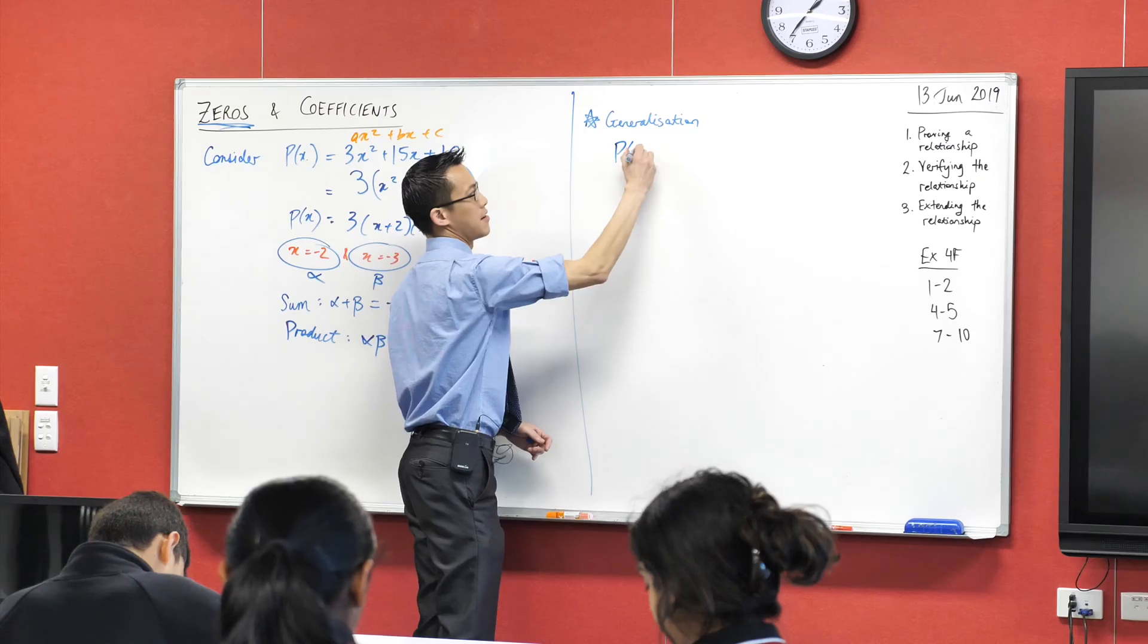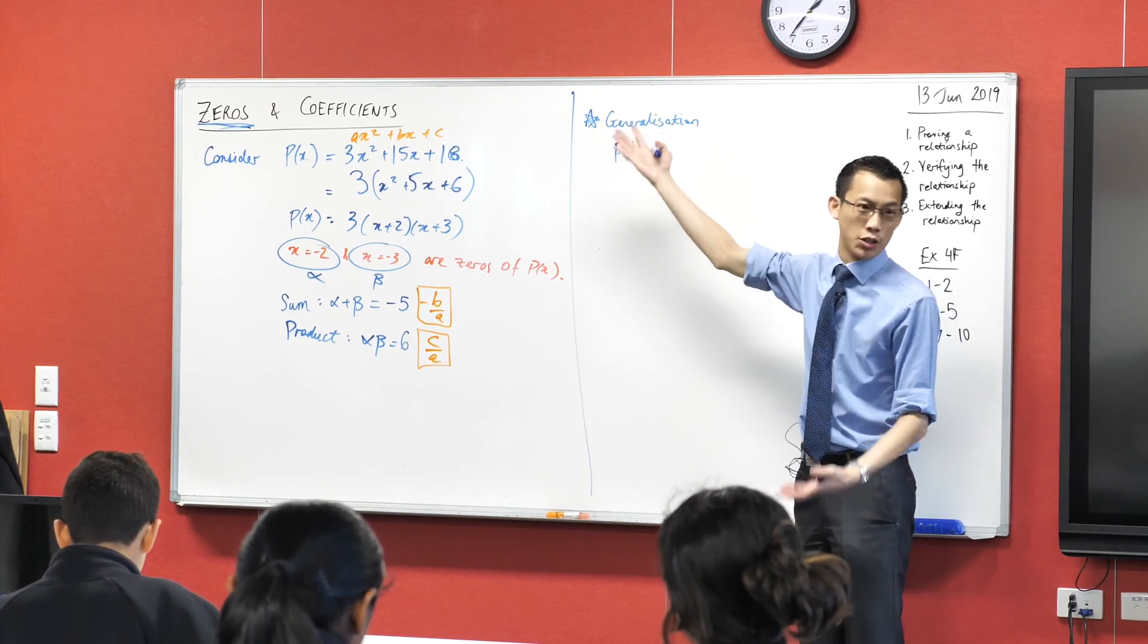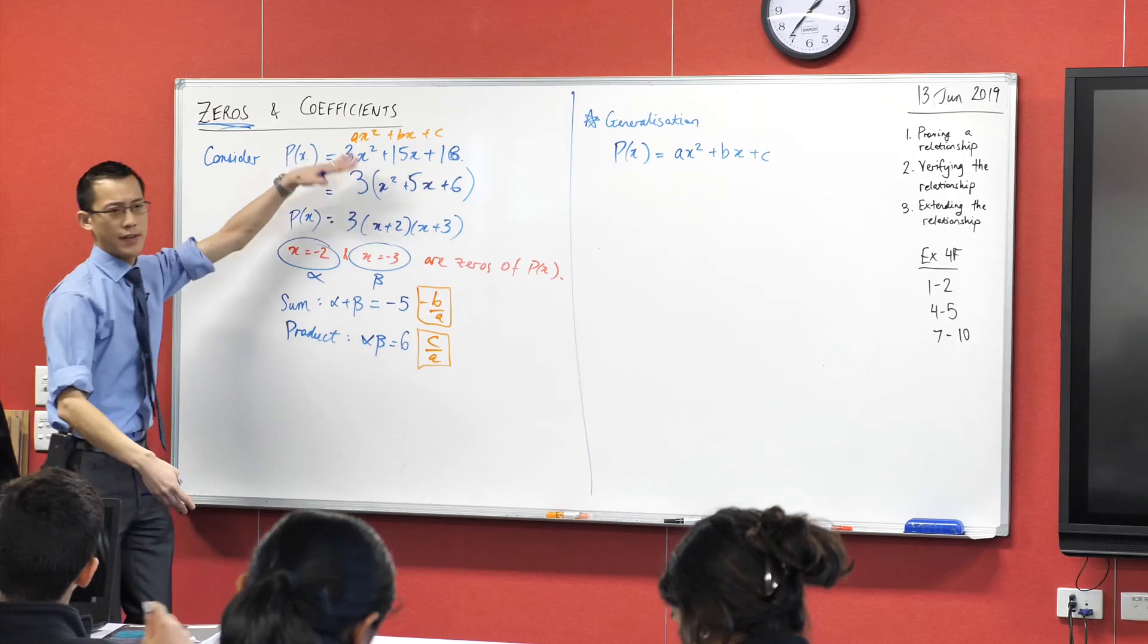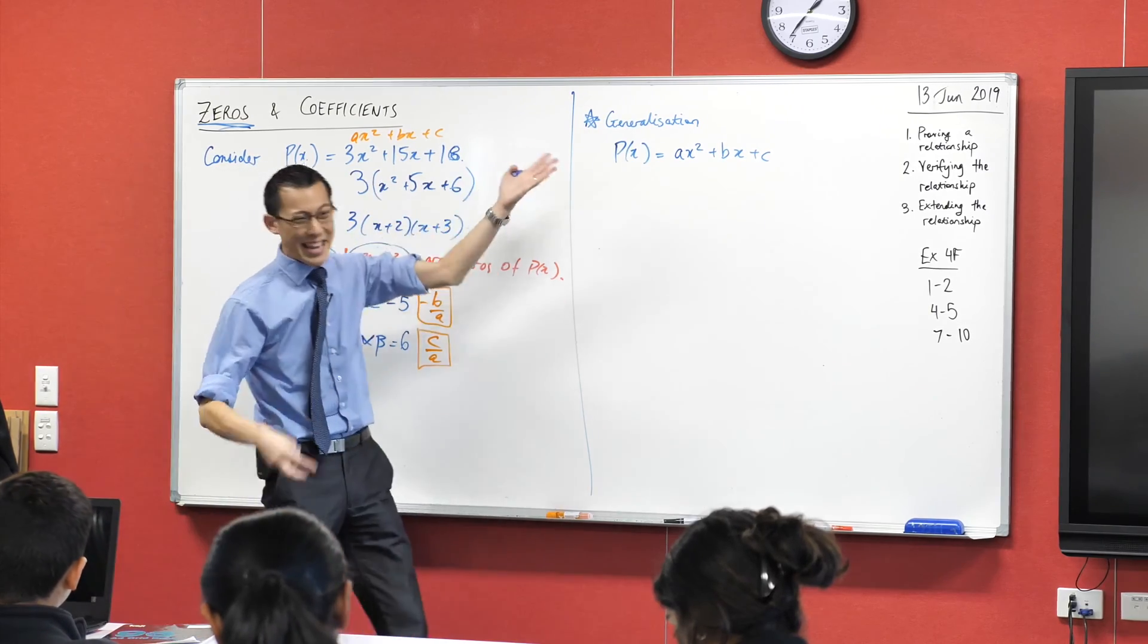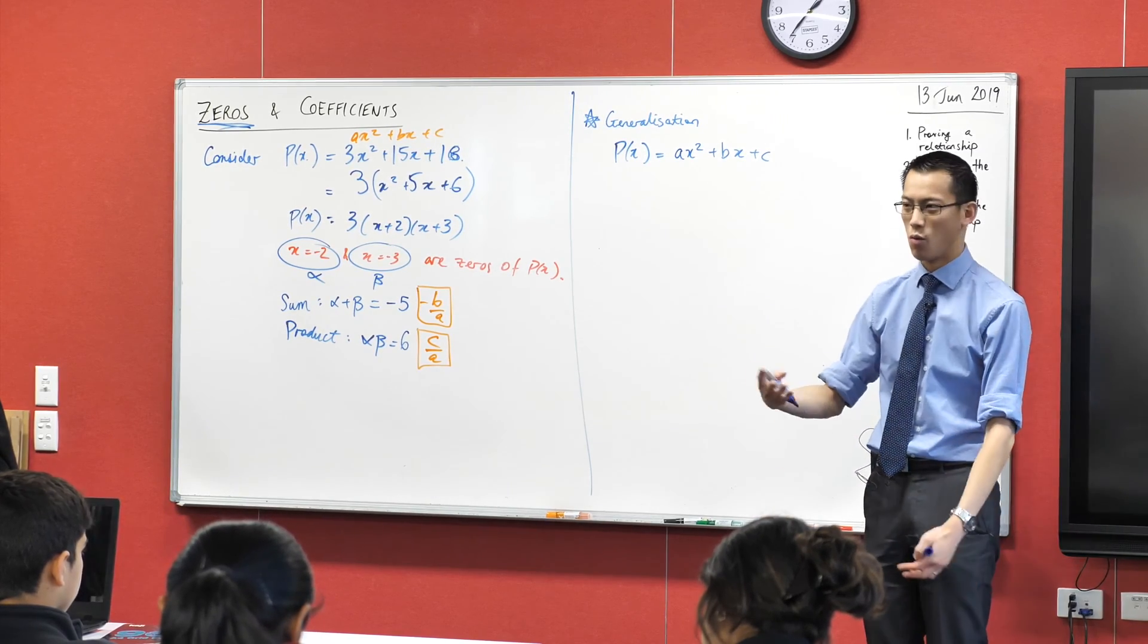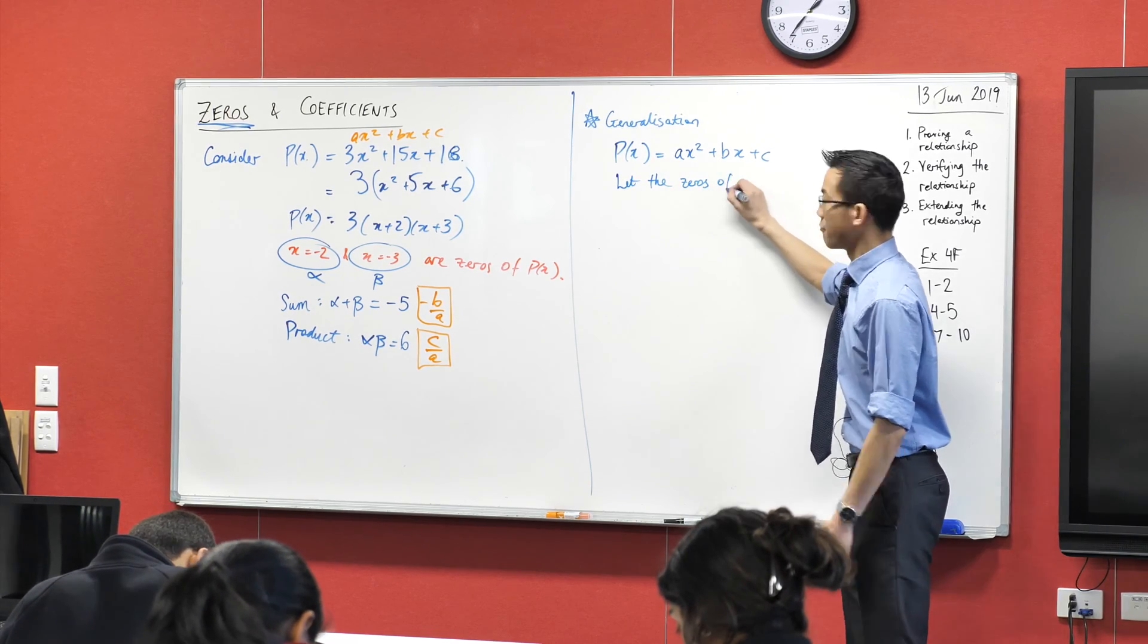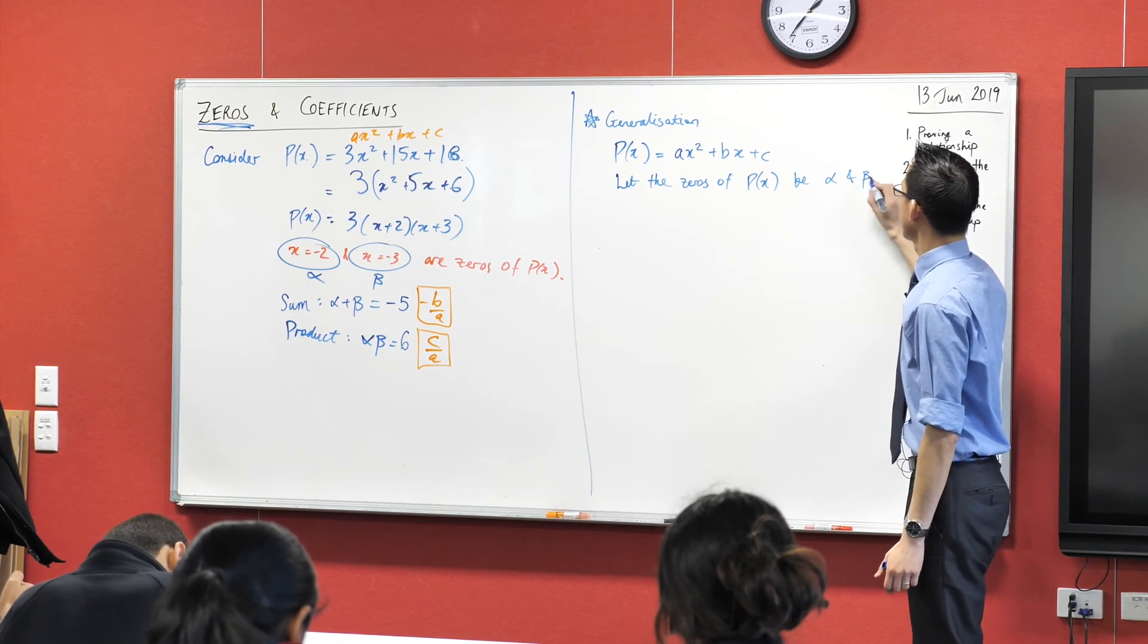So I'm going to call this P of x. Instead of having numbers like 3, 15, and 18, a general quadratic would be A, because it could be anything, and B and C, so I'm going to write it like so: Ax squared plus Bx plus C. Now I went through this process of factorized and I got two zeros out of that, and then I named the zeros. I called them alpha and beta, but because this could be any polynomial, any quadratic I like, I don't know what alpha and beta are. I don't know if they're negative 2 and negative 3, or 1 and 8, or who knows what they are. So all I can call them is alpha and beta. So I'm just going to say let the zeros of this particular polynomial, this quadratic, let them be alpha and beta.